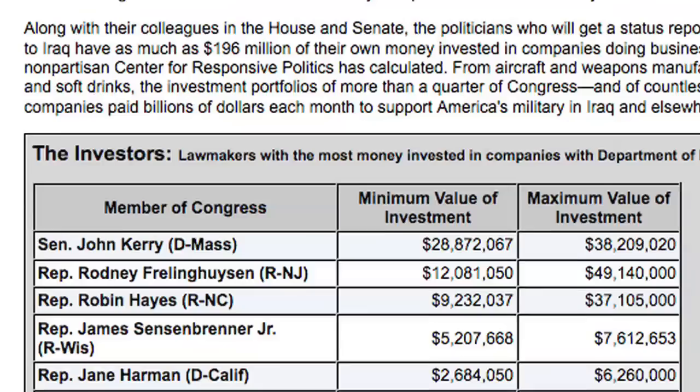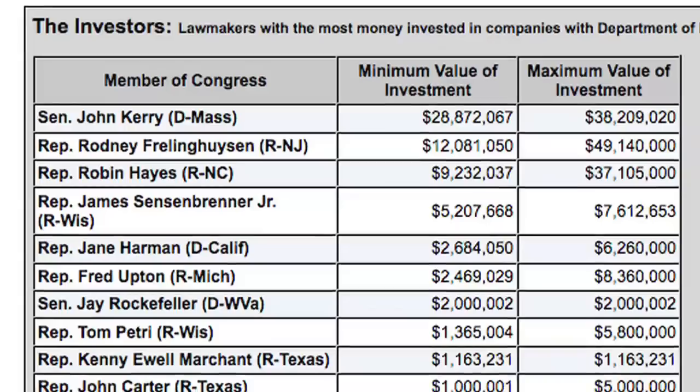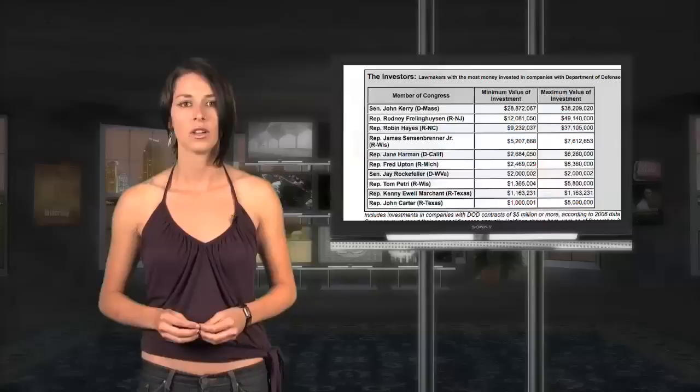According to recent reports from OpenSecrets.org, 151 members of Congress in 2006 had up to $195.5 million of their personal assets invested in defense corporations.